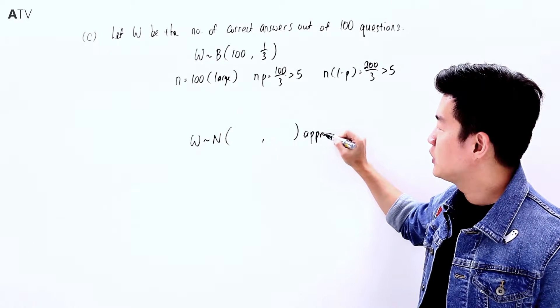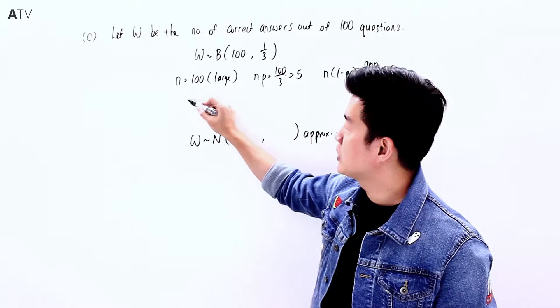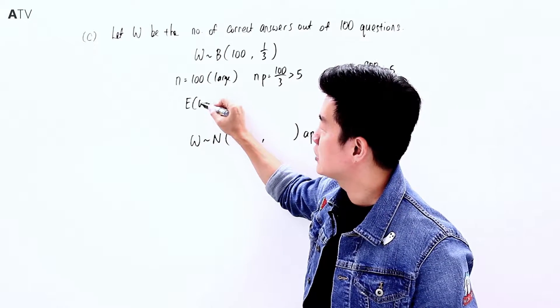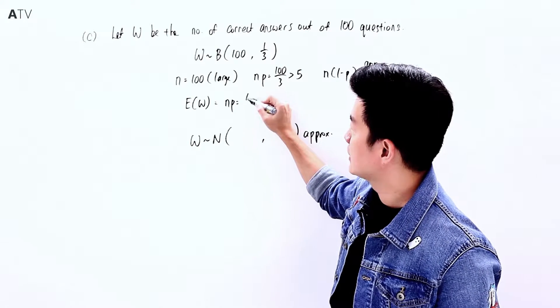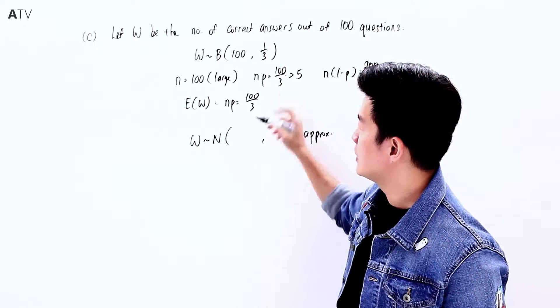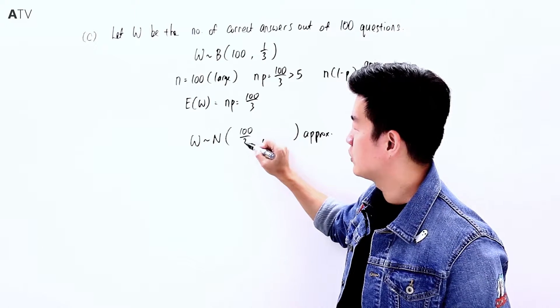To find the parameters for the normal distribution, we need the expectation and variance of W. The expectation of W is np = 100/3.